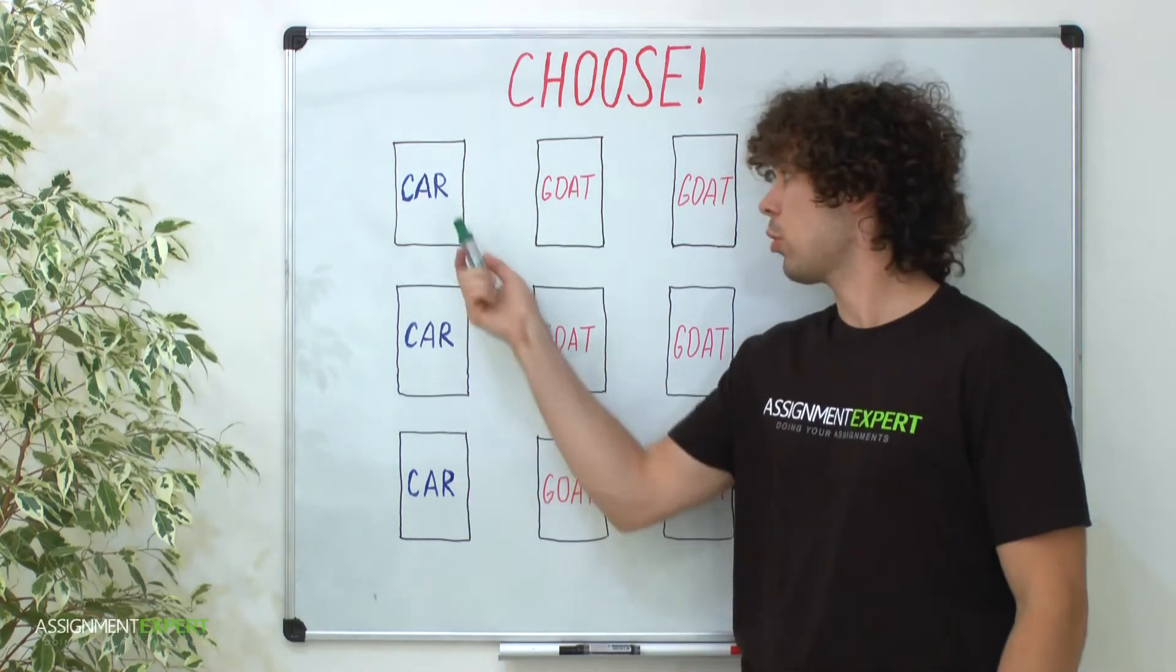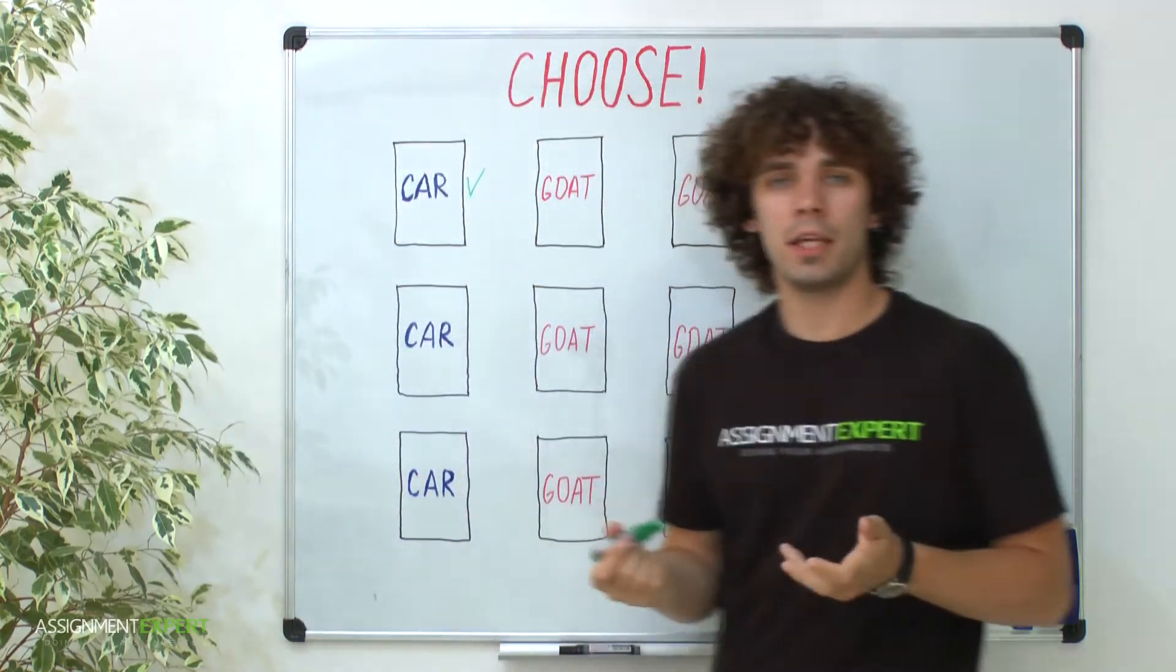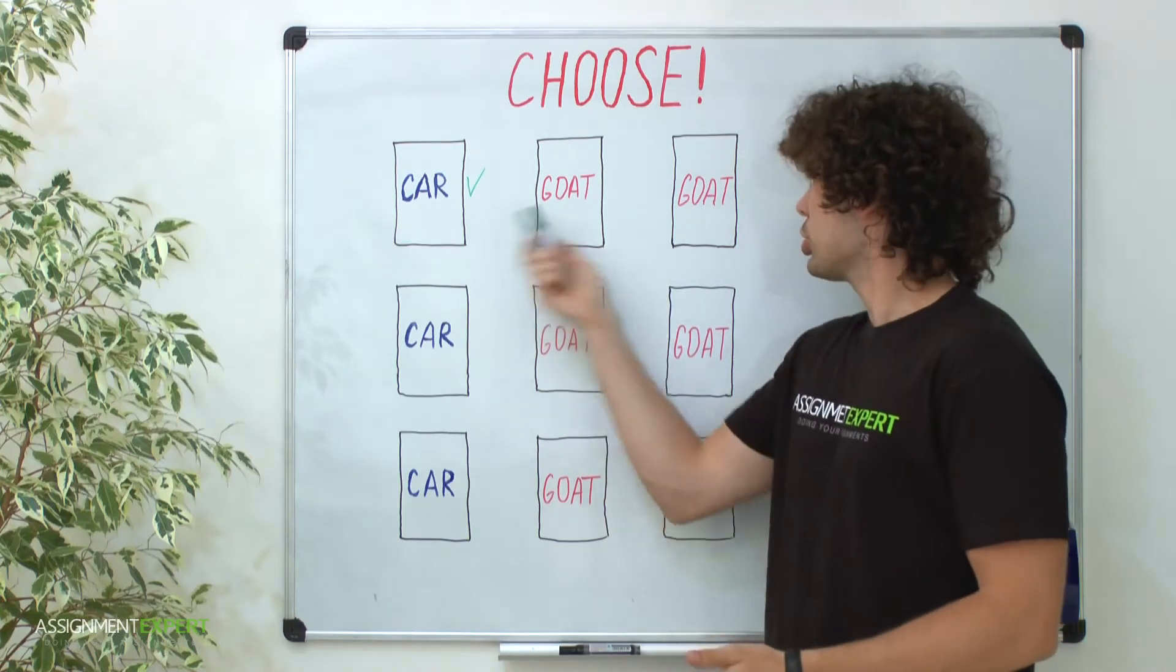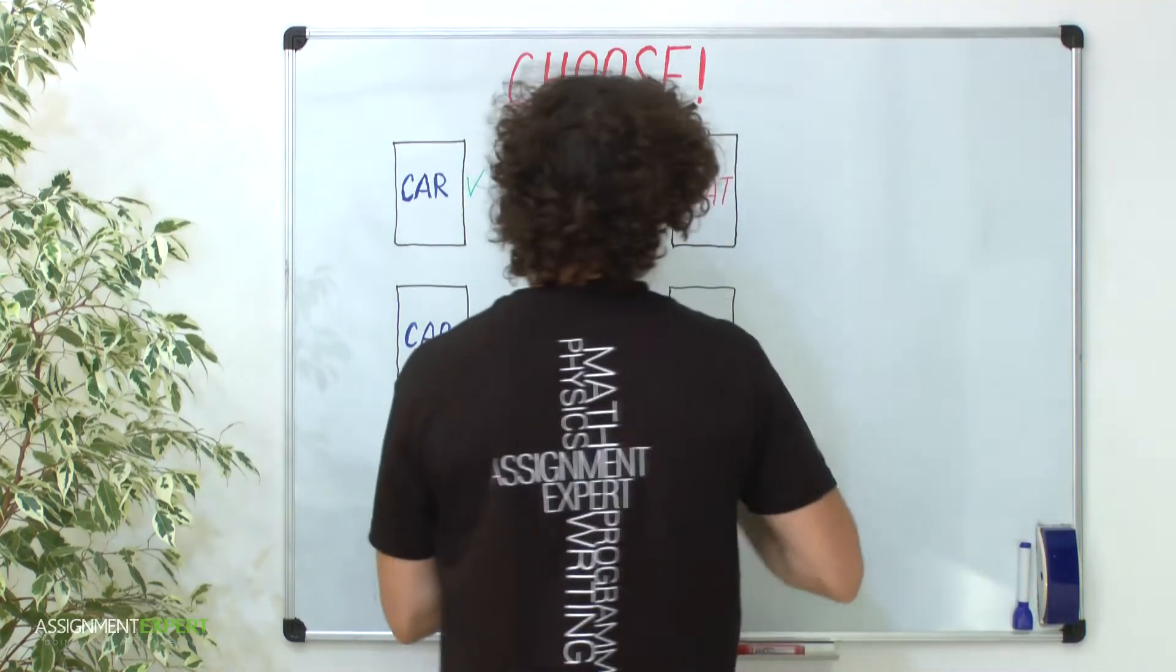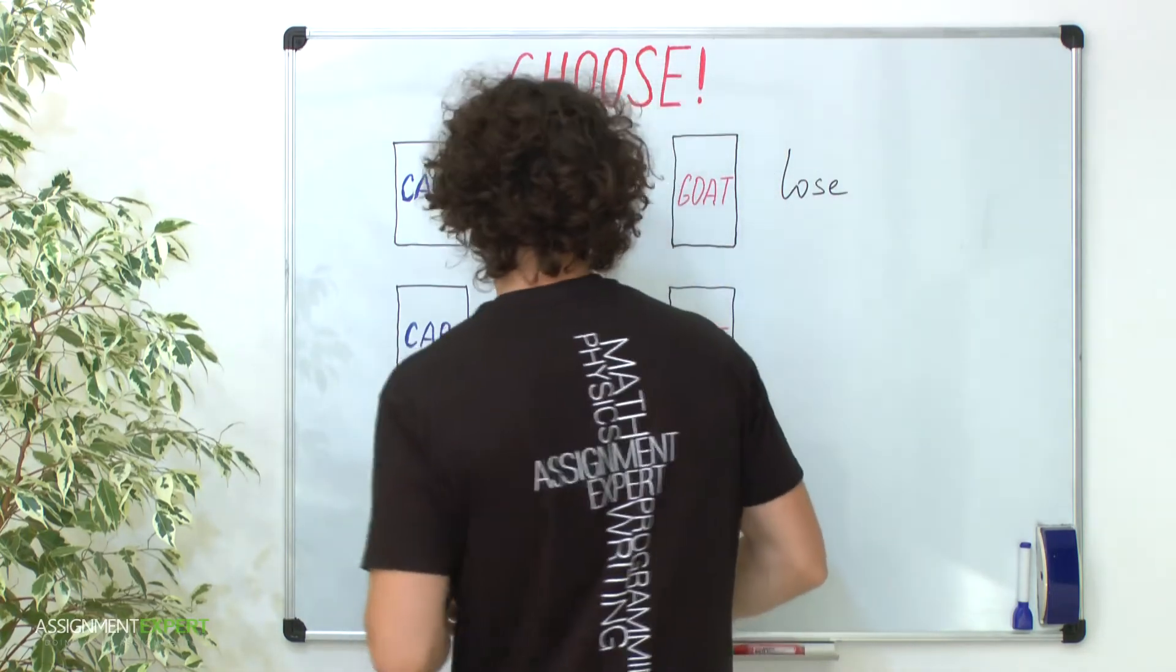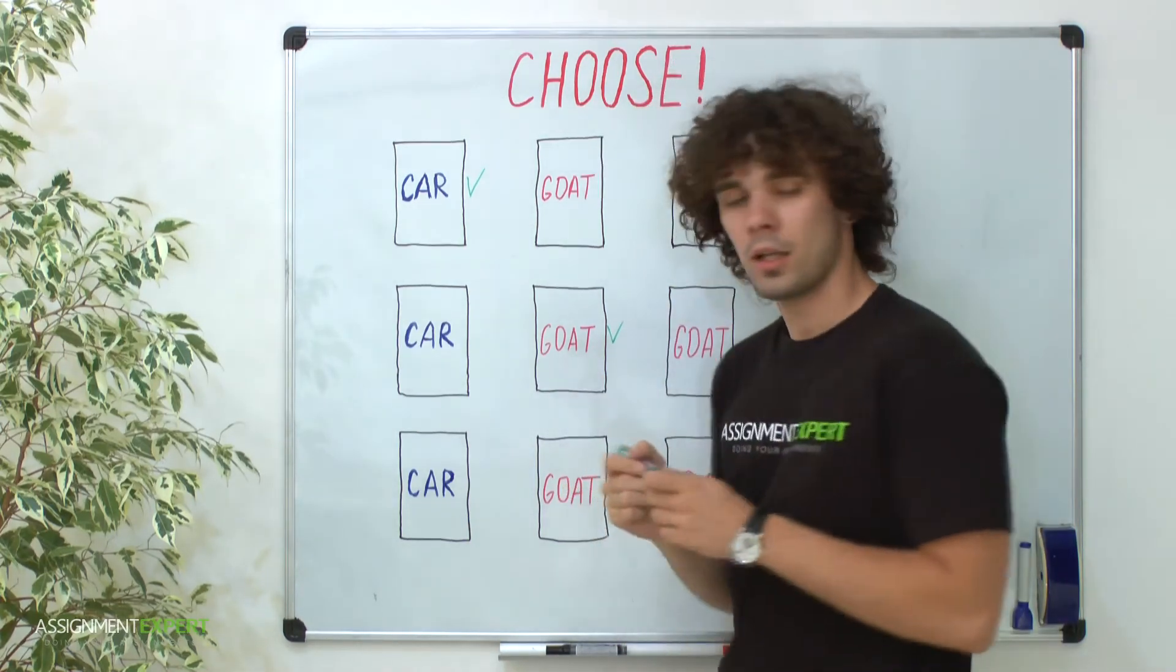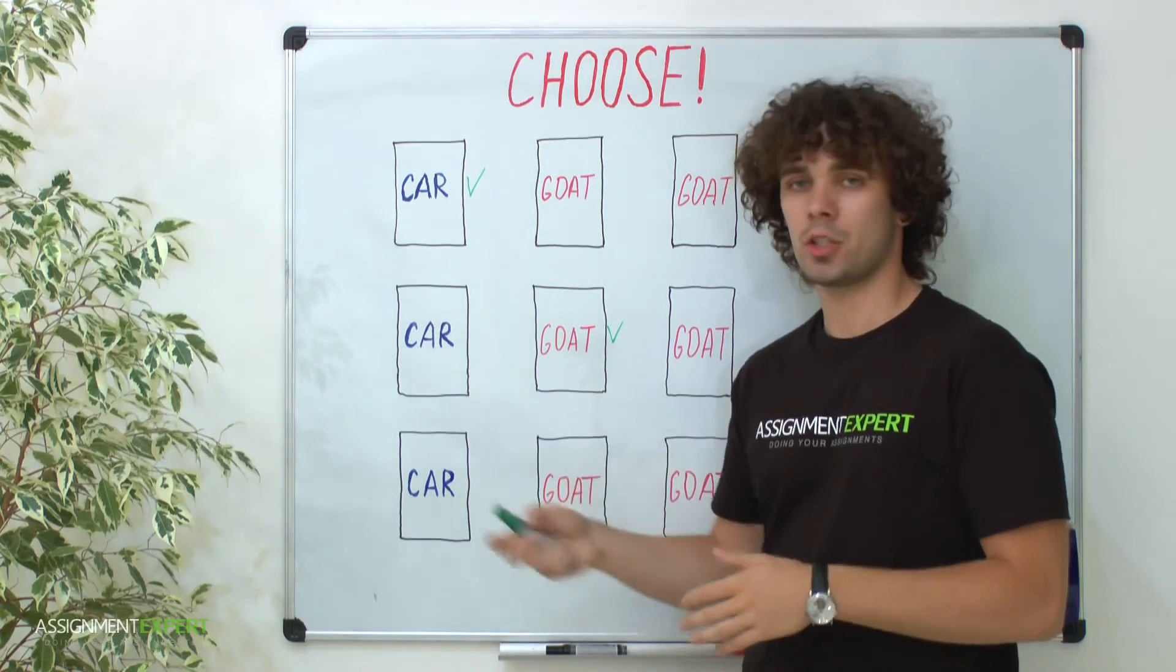Suppose you initially pick the door with the car. Then I will show you either goat one or goat two. Let's say I show you goat one. Then we will change the door and get goat two. So here we lose. If we initially pick goat one, then I will show you where goat two is. You will change the door and get a car, so it's a win.